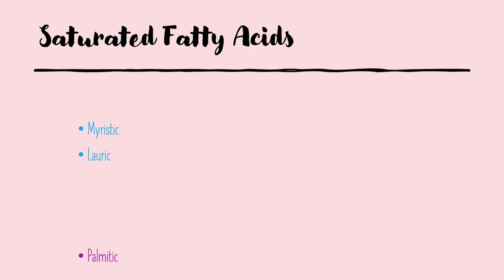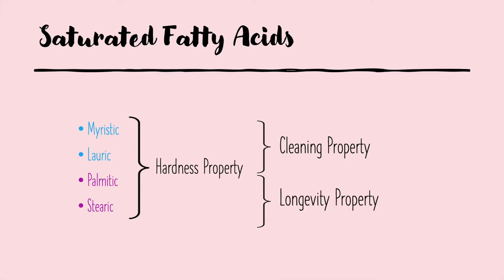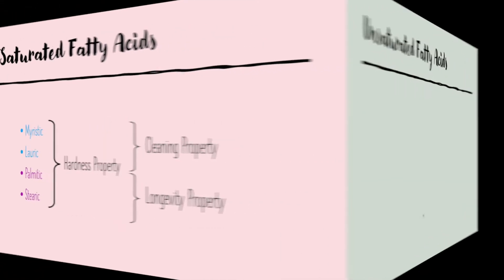Meanwhile, palmitic and stearic have longer saturated carbon chains and will create a hard, stable soap with a creamy lather and increased lifespan. So they all have a hardness property, and with myristic and lauric we get the cleaning property, while with palmitic and stearic we get the longevity property.